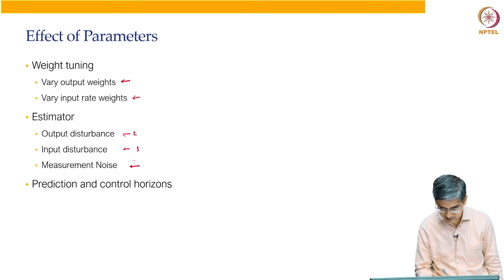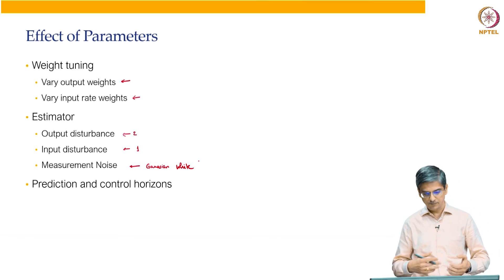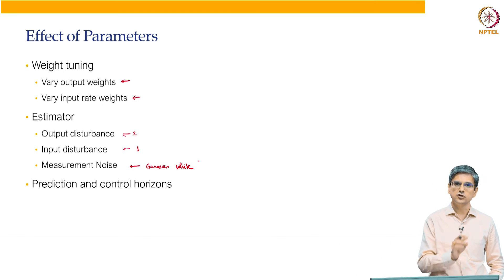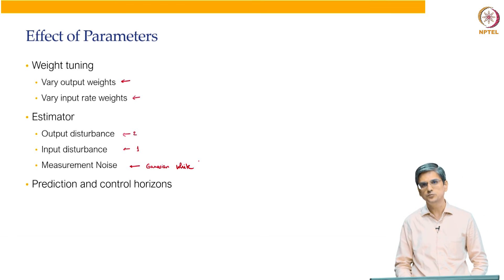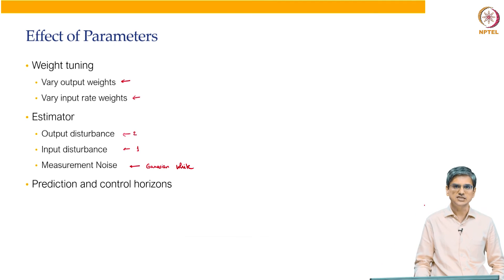Measurement noise is a Gaussian white noise. And finally, you can play around with the prediction and control horizon and see the effect of changing p and changing m. Always m is going to be less than or equal to p. You can change the p by keeping m constant. You can change m by keeping p constant. And you can try out various things and observe what is the effect of m and p.